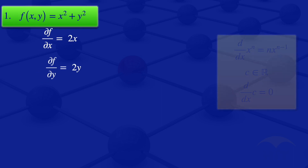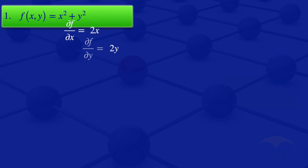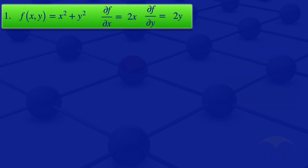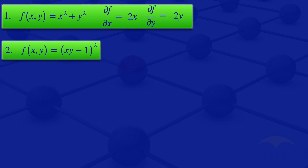I can now move on to question number 2, where f(x, y) = (xy − 1)². I'll start by looking at the partial derivative of f with respect to x.